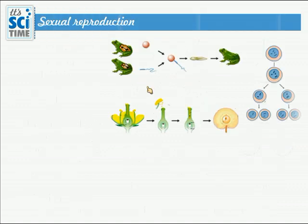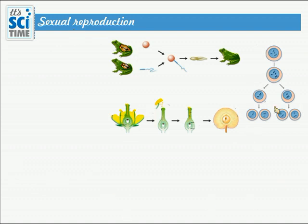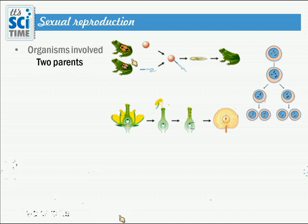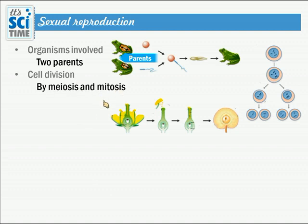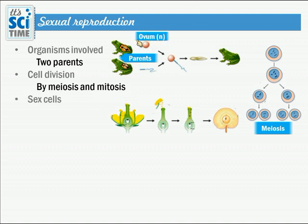Now let's look at sexual reproduction. Here you can see pictures of animal reproduction and plant reproduction side by side, along with the cell division method. How many organisms are involved? Two parents — one female and one male. Both meiosis and mitosis occur. Meiosis is very important to produce the sex cells or gametes. The sex cells shown are ovum from the female and sperm from the male.